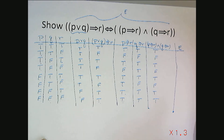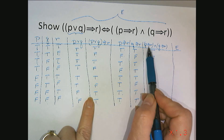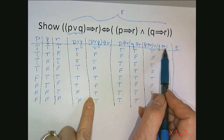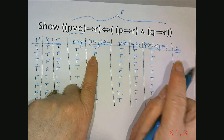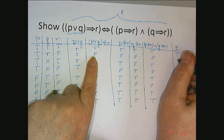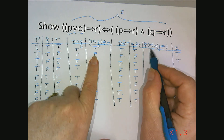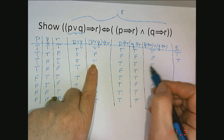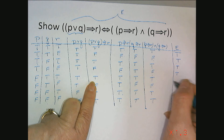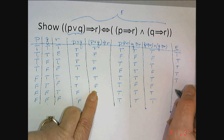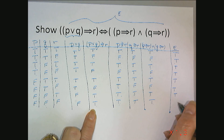Now I'm at the last step — are these two equivalent? I compare the column p or q implying r to p implies r and q implies r. True equivalent to true is true; false equivalent to false is true; true equivalent to true is true; false equivalent to false is true; true equivalent to true is true; false equivalent to false is true; true equivalent to true is true; true equivalent to true is true. All rows are true, proving the equivalence.